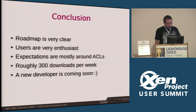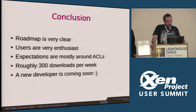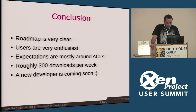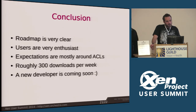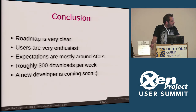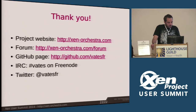So let's conclude. As you can see, the roadmap is very clear because we got a lot of inputs from users telling us what's really important. Those users are very enthusiastic, and expectations are mostly around ACLs. We've got roughly 300 downloads per week — that's not bad. We're starting to build a community on our forums with a lot of activity, so it's really interesting to have feedback. The good news is we'll have a new developer coming soon, which will speed up the development of Xenorchestra. If you want to get to the project website, we've got a forum, a GitHub page, IRC, and Twitter. If you have any questions, feel free to ask.